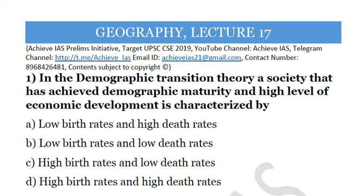The first question is: in the demographic transition theory, a society that has achieved demographic maturity and a high level of economic development is characterized by — A. Low birth rates and high death rates. B. Low birth rates and low death rates. C. High birth rates and low death rates. D. High birth rates and high death rates. The answer would be B.